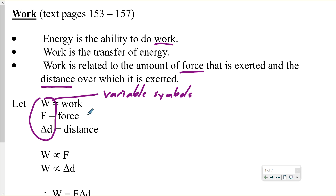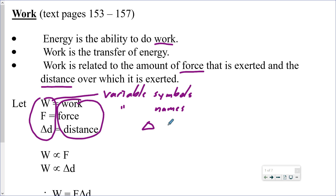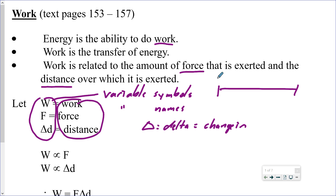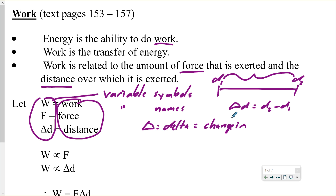We have variable symbols and variable names. It is a capital W for work, a capital F for force, and a lowercase d for distance. The triangle in front — delta — means the change in. So the change in distance: if we have an initial position d1 and a final position d2, the change in distance is d2 minus d1.